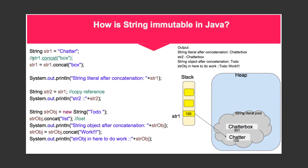But in the next line you do this: str1 equals str1.concat(Box). So what happens is now the reference of str1 here, which was previously 100, will be updated to 301.